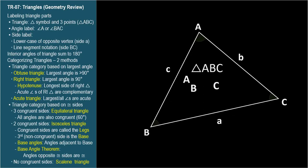The interior angles of a triangle always add up to 180 degrees. This is very important: every triangle has interior angles that add up to 180 degrees, or pi radians.